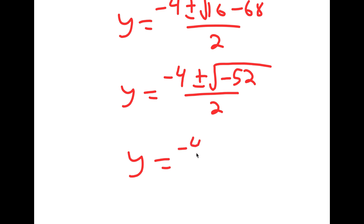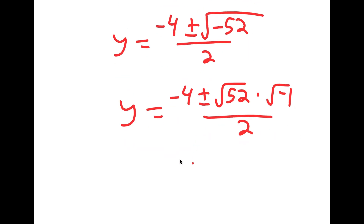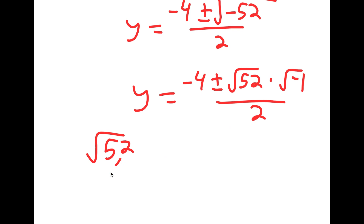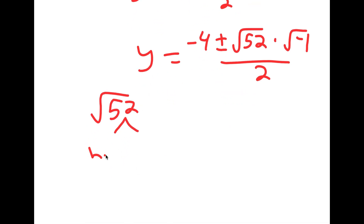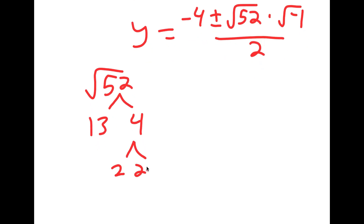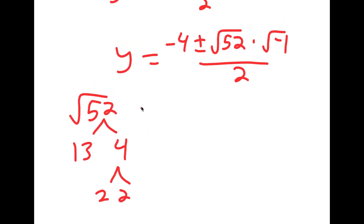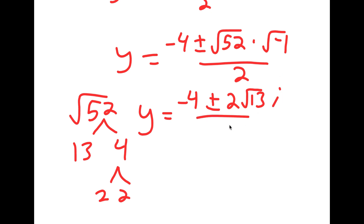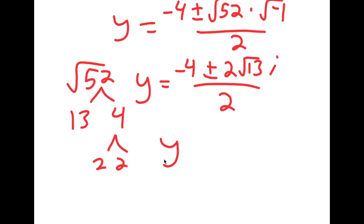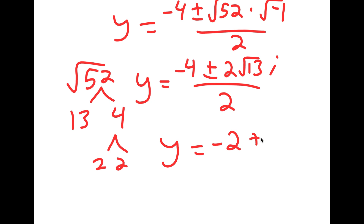This equals negative 4 plus or minus the square root of negative 52 over 2. That can be rewritten as negative 4 plus or minus the square root of 52 times the square root of negative 1 over 2. Since 52 is 13 times 4, the square root of 52 simplifies to 2 root 13. So y equals negative 4 plus or minus 2 root 13 times i over 2, which simplifies to y equals negative 2 plus or minus the square root of 13 times i.